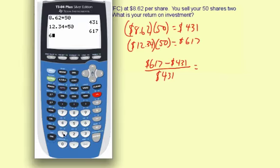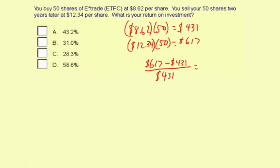So $617 minus $431 equals $186. So it was $186 made. And when you divide that by the $431 that was originally invested, you get your return on investment, which is 43.15%, or roughly 43.2%, which is A.